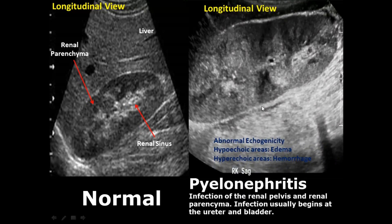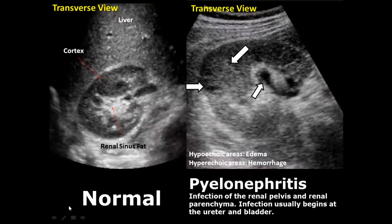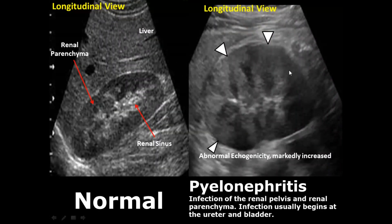Pyelonephritis is the infection of the kidney. It usually involves the renal pelvis and the renal parenchyma, and it can cause abnormal echogenicity in the kidneys. The regions that are hyperechoic are due to hemorrhage, and the regions that are hypoechoic are due to edema. The transverse view of pyelonephritis shows a hyperechoic area and some hypoechoic area — it is an overall heterogeneous appearance. We have to correlate these findings clinically as well. Another longitudinal view shows the medulla clearly with abnormal echogenicity and hyperechoic regions.